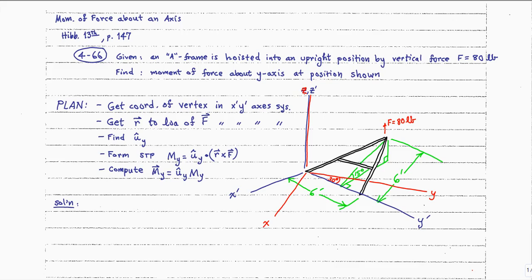To get at a solution, a plan may involve first getting the coordinates of the vertex — let me put some letters here. I'm calling that point C. So let's get the coordinates of the vertex C in the x-prime, y-prime, z-prime axis system.